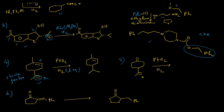The next example has a compound where both double bonds are sterically accessible — both are less hindered. If we perform the hydrogenation reaction using platinum oxide in the presence of hydrogen gas, we obtain the product where both double bonds are fully hydrogenated.